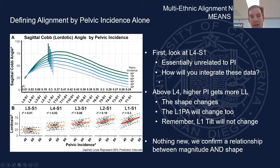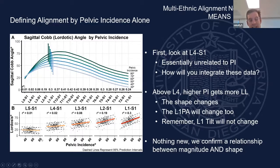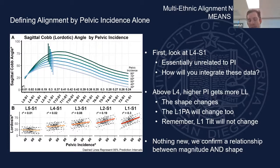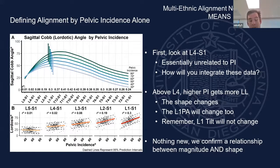Looking at L4 to S1 lordosis versus pelvic incidence: L4 to S1 lordosis is essentially unrelated to pelvic incidence. The scatter is about 15 to 35, roughly 10 on each side, but on average it's about 25 degrees. Averages aren't ideal for personalized medicine, but you need to accept average sometimes. On average, L5-S1 is 25 degrees; on average, L4-L5 is 15 degrees. This is important for thinking about how you treat degenerative spondylolisthesis.